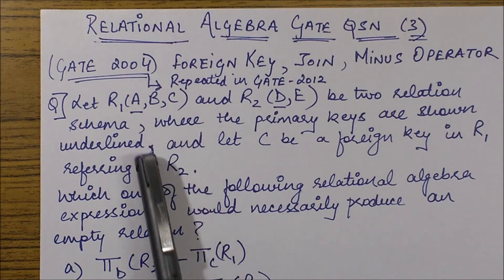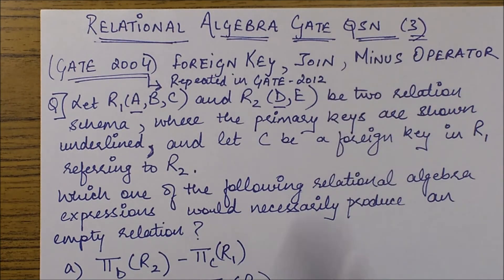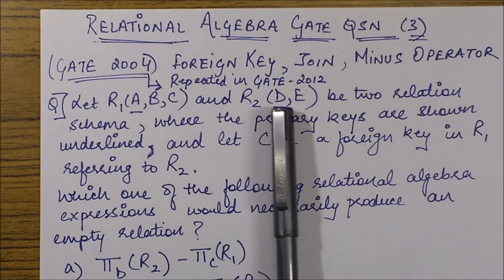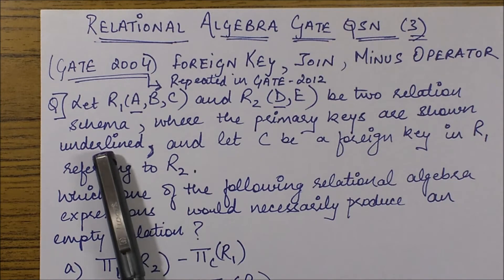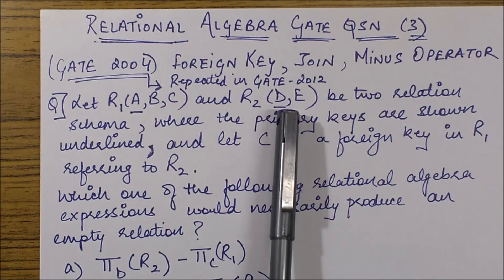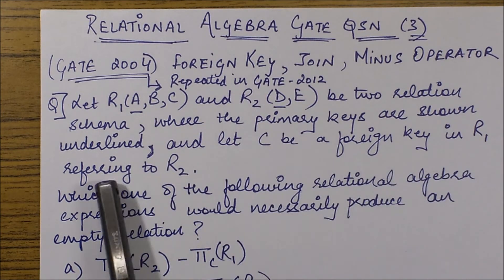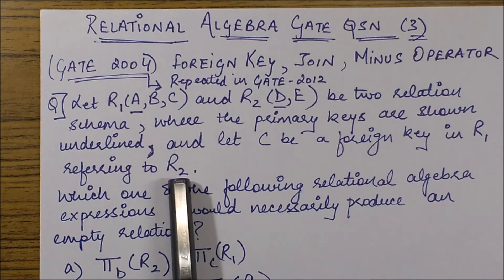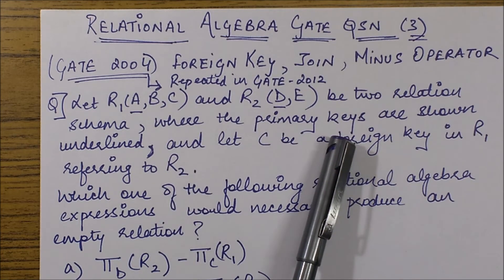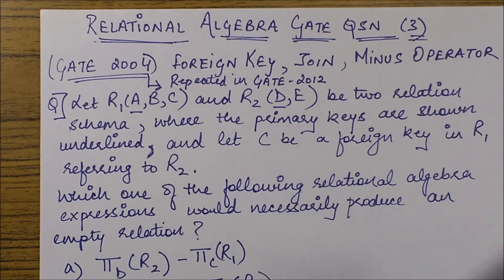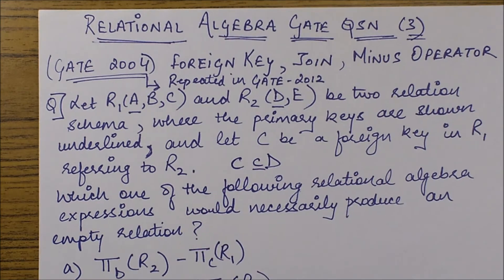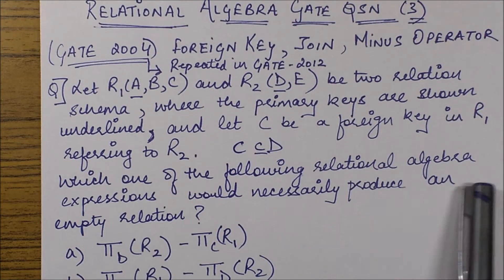The question states: let R1(A, B, C) and R2(D, E) be two relational schemas where the primary keys are underlined. The primary key in R1 is A and the primary key in R2 is D. C is a foreign key in R1 referring to R2. Since C refers to the primary key D of R2, that means C is clearly a subset of D.